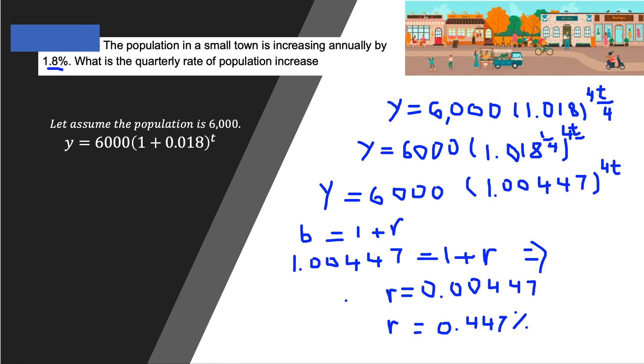Even if you look, for example, roughly to find out, 1.8 divided by 4, you're going to get 0.45, which is approximately this. But this is more exact for how much the population of the small town is going to increase quarterly.